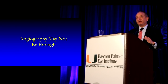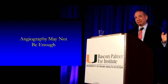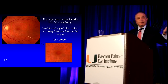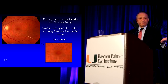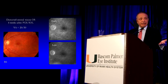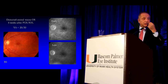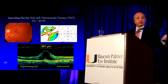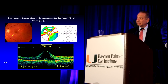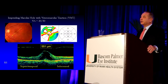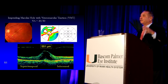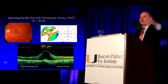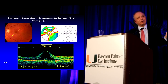Angiography may be going away — Dr. Rosenfeld will talk about that. This patient had a cataract operation, and the macula looks okay on exam. Here's the angiogram of the left eye — it's normal. But here's the OCT: this patient has vitreomacular traction syndrome, which is now widely recognized as a source of macular symptoms. You would never ever see this if you just did an angiogram. It's not that angiography may not be enough — I think it's OCT first, angiography later.